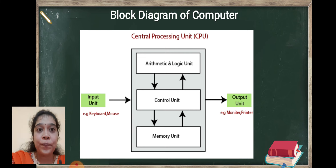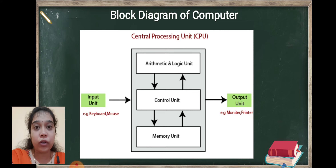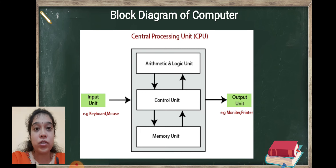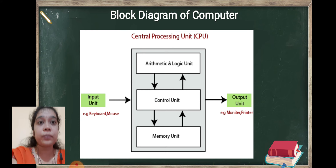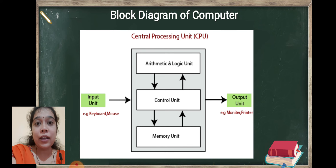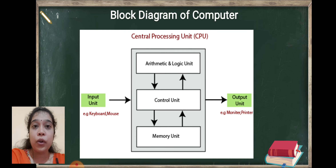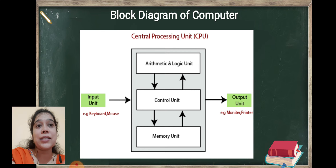Third unit is memory unit. We use computer generally to store data. The memory unit is responsible to store the data. Whatever input you provide, whatever process is performed on that input data, all the data is stored in the memory unit. Hence arithmetic and logical unit, control unit, and memory unit together are combinedly called as the central processing unit, that is CPU.